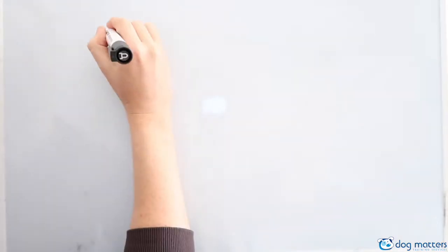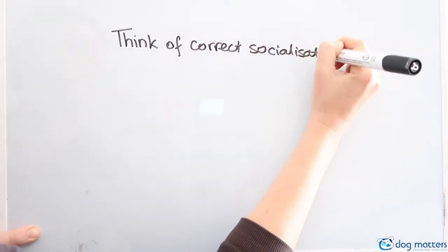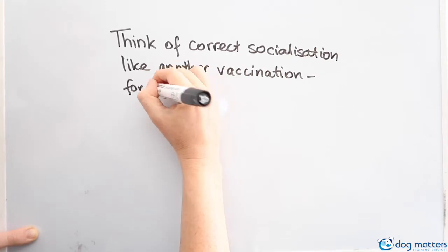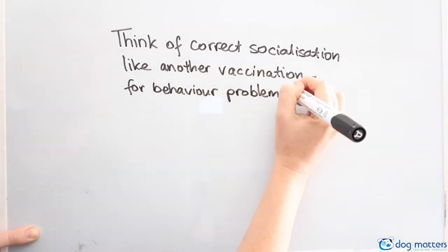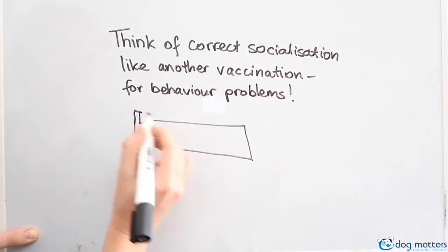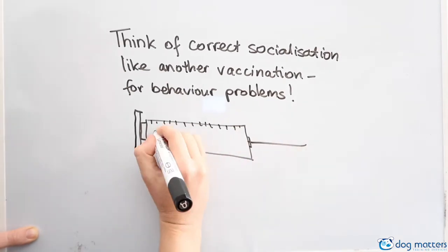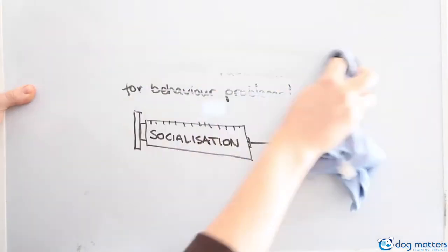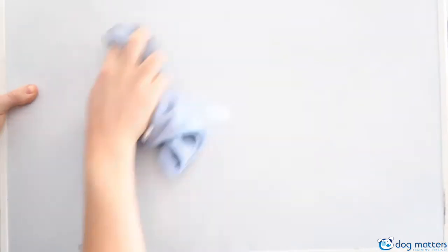So think of correct socialization like another vaccination. It's a vaccination against behavior problems, because more dogs are destroyed every year from these behavior problems resulting from a lack of socialization than dogs that die from the diseases we're preventing.